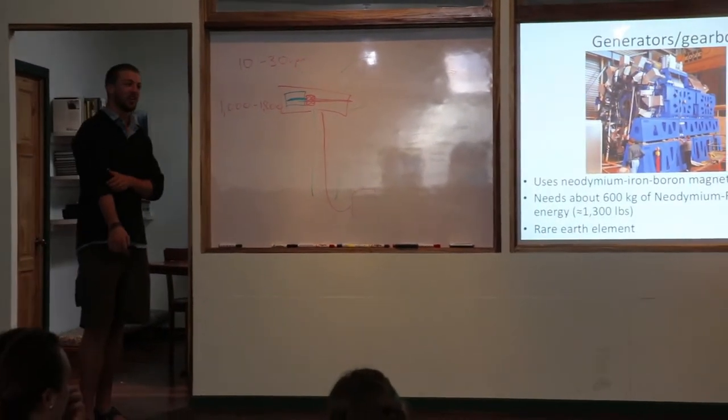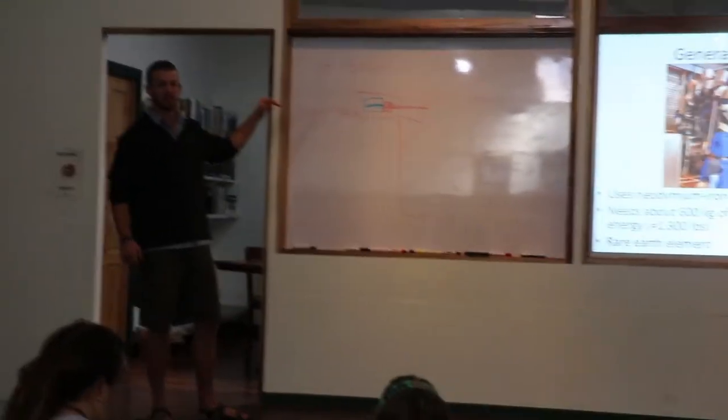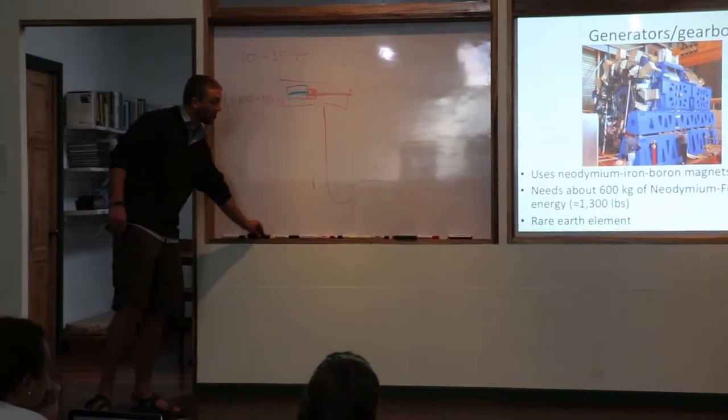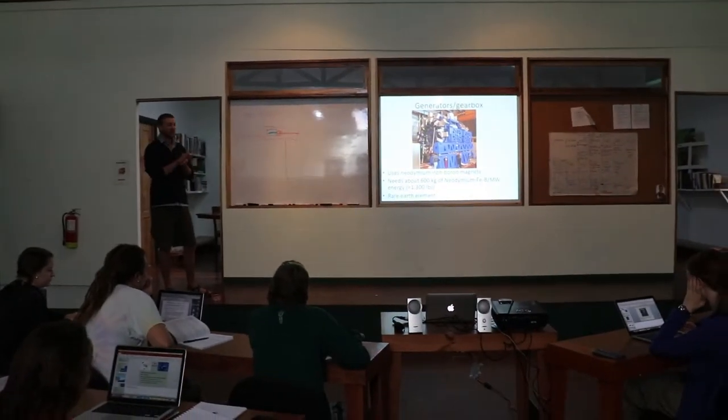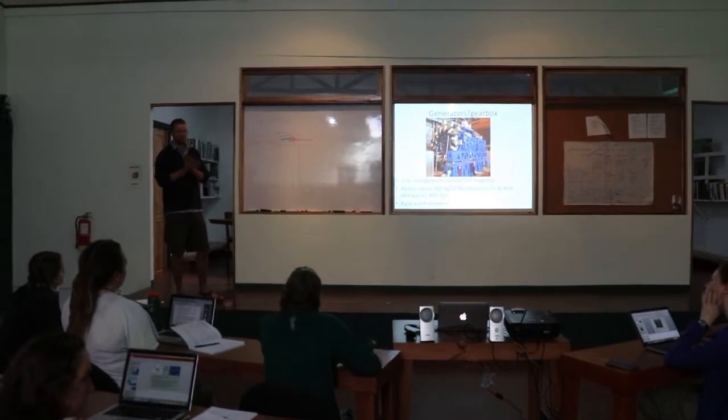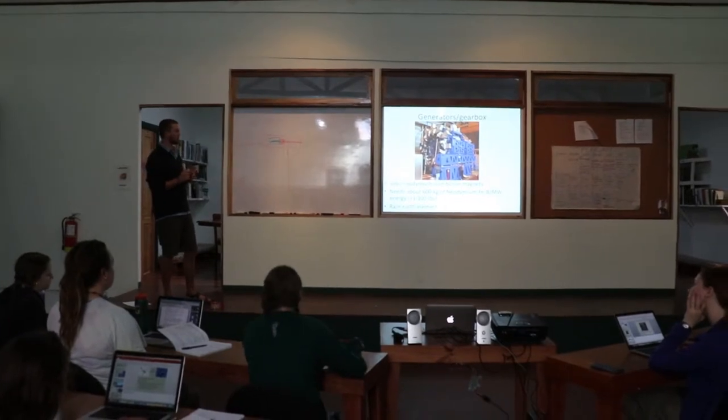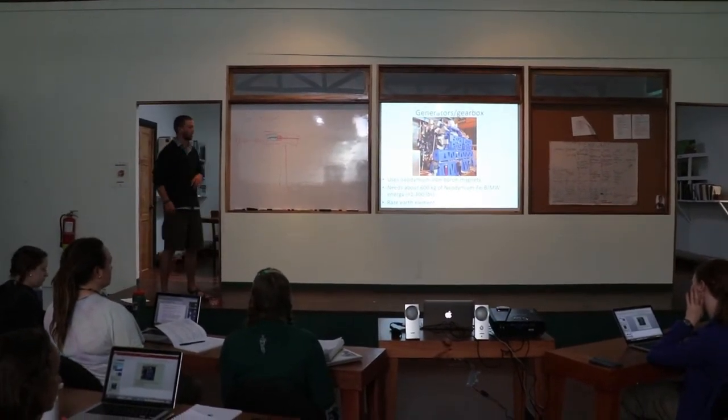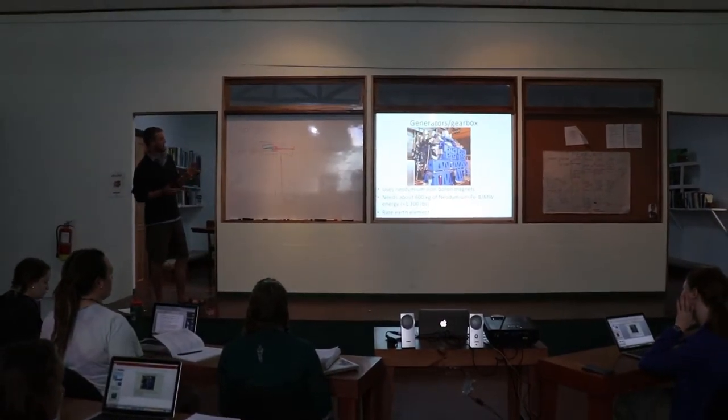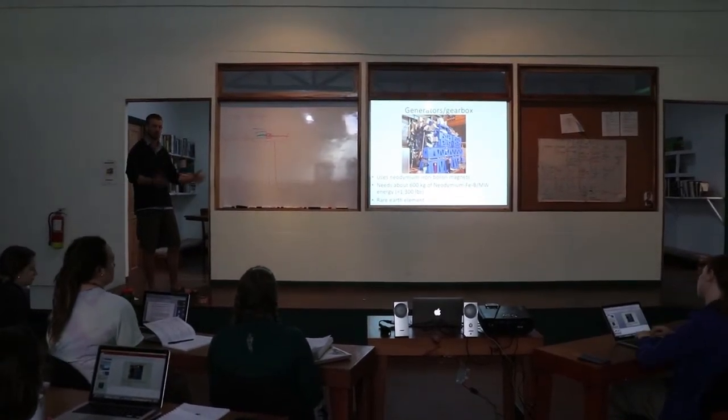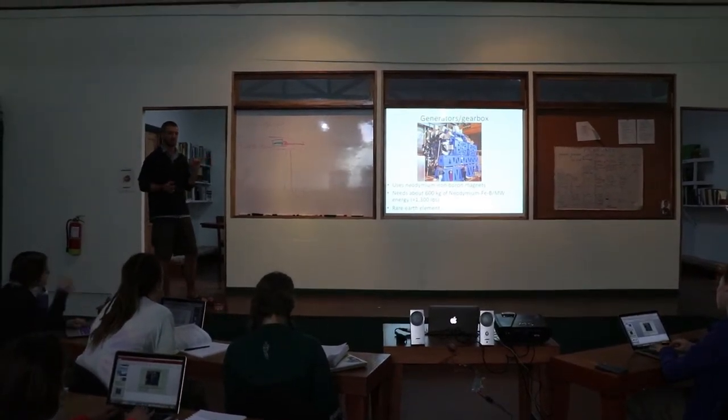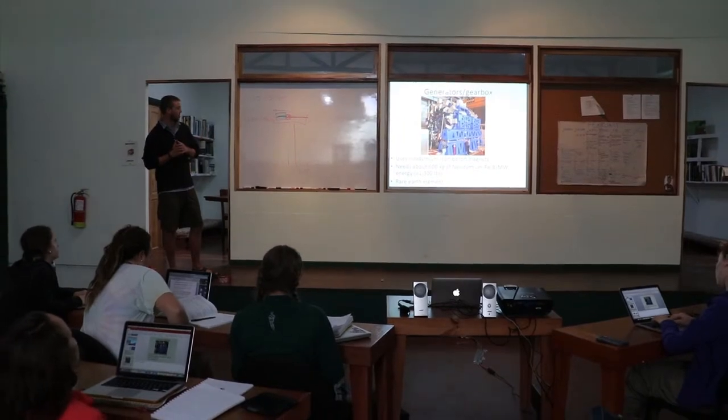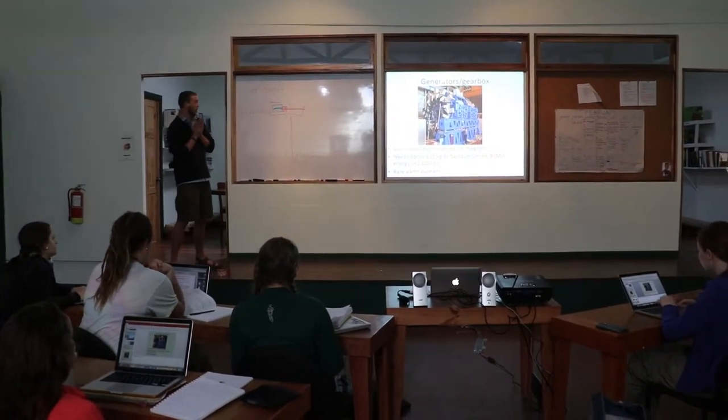So that generator is huge. And actually, this whole nacelle is huge. You can land helicopters on these, some of them. So I like this picture because it shows you the scale of it - that's a little man standing next to it. So the generator itself is composed of these neodymium iron boron magnets. That's the common material used, and those are these chunks right here. Neodymium itself is a rare earth metal that's mined in China. So that creates a lot of waste, the process of extracting that. And the reason that that material is used is just the efficiency of the generator. It works best with that. And you can see it uses a whole bunch of this material - 600 kilograms.